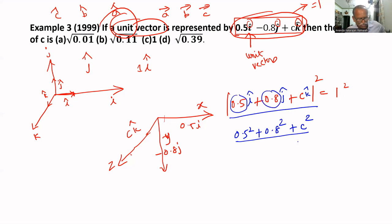If you add all these together, this is equal to 0.25, this is equal to 0.64, plus C square equal to 1. If you add these two, you will get 0.89.